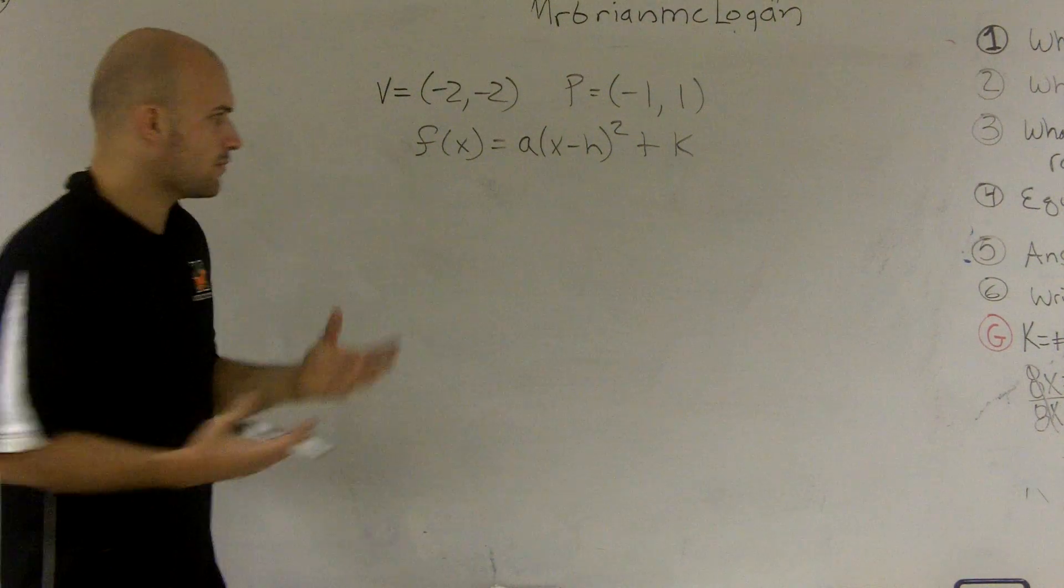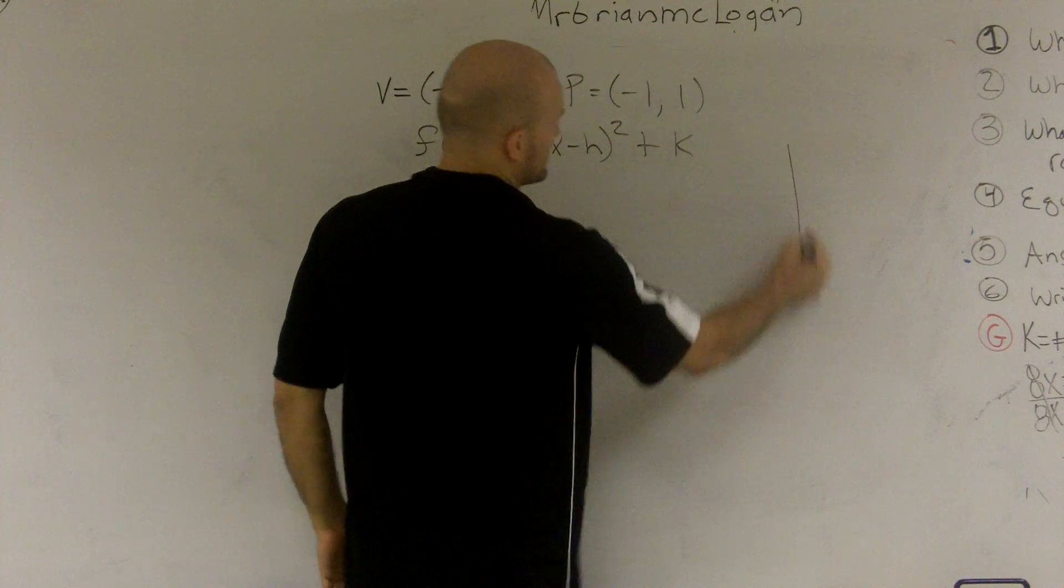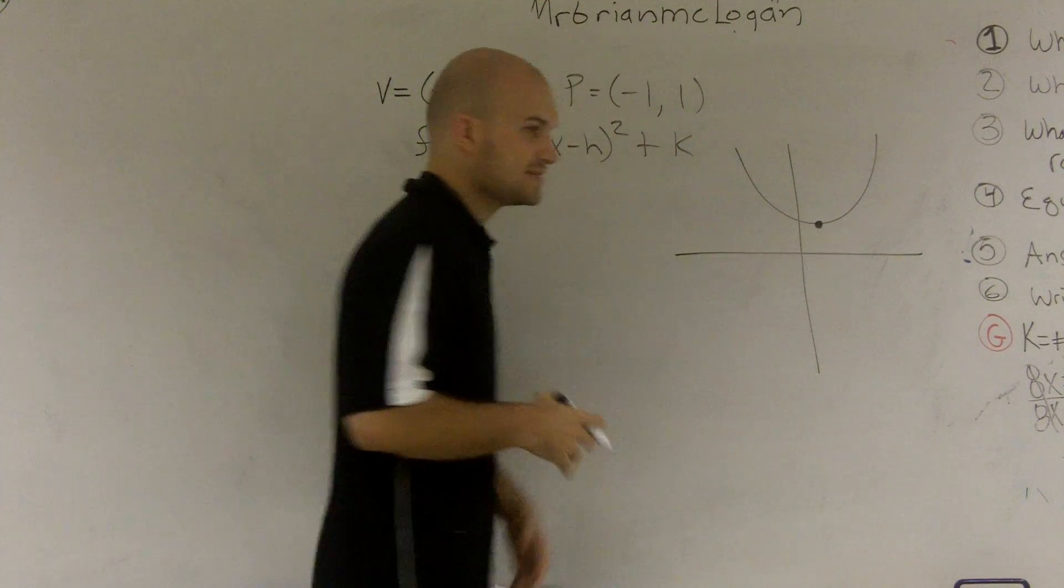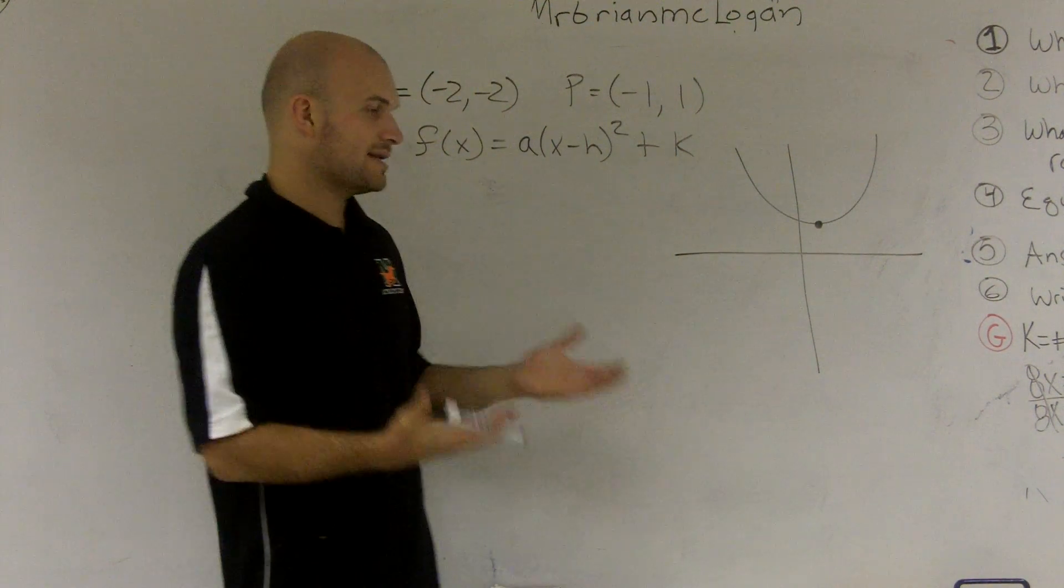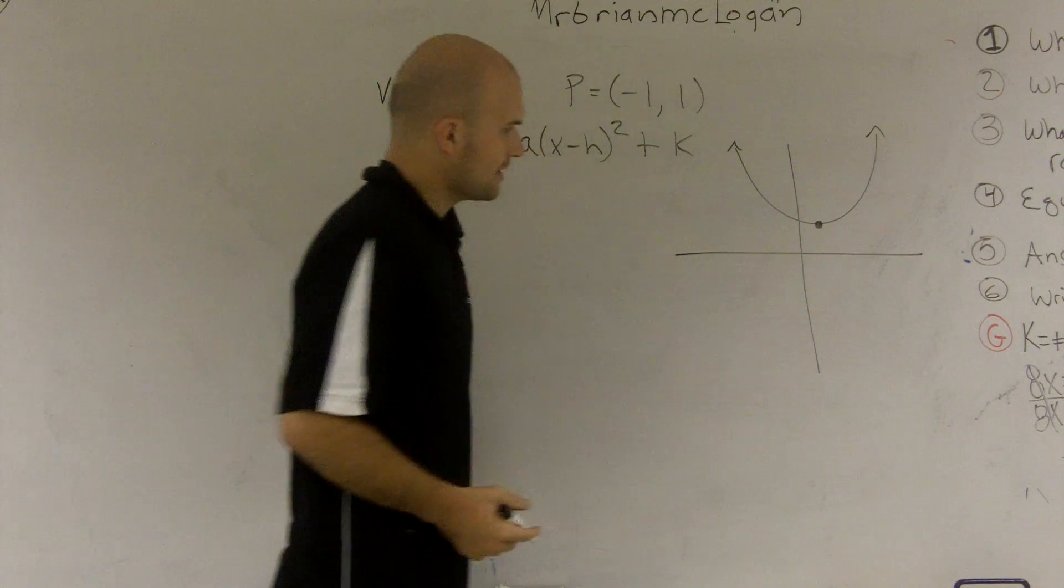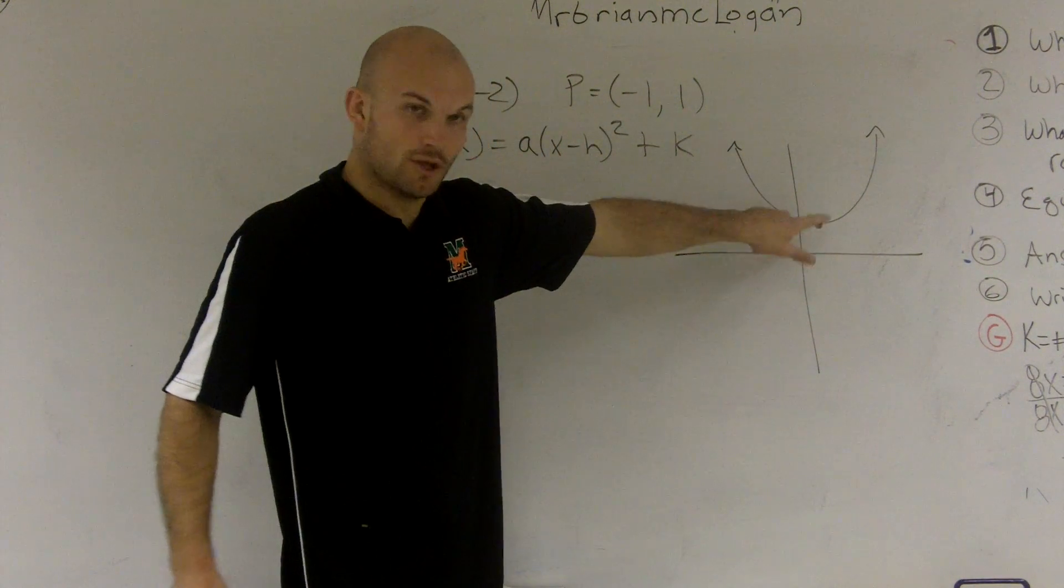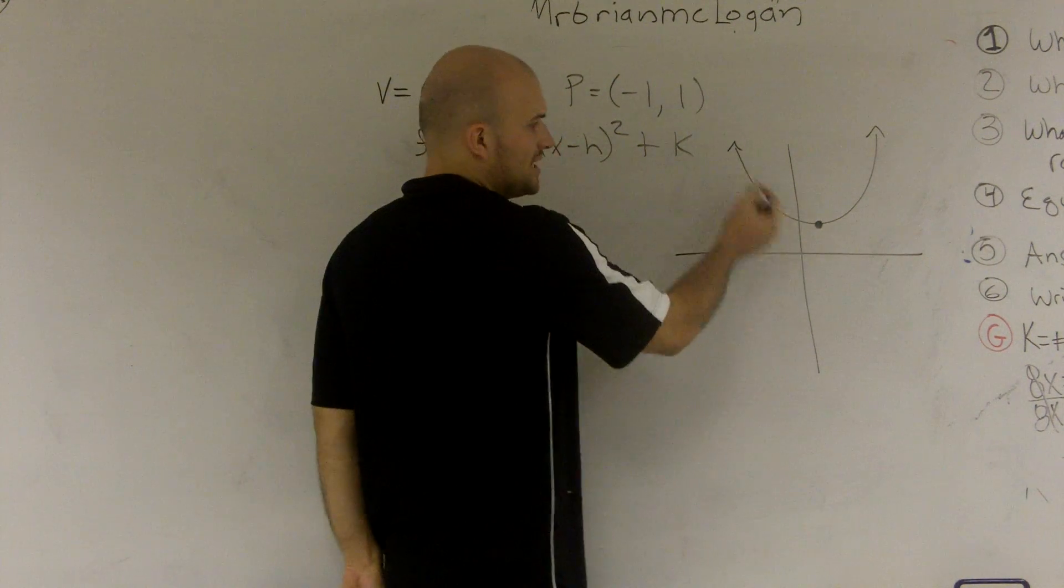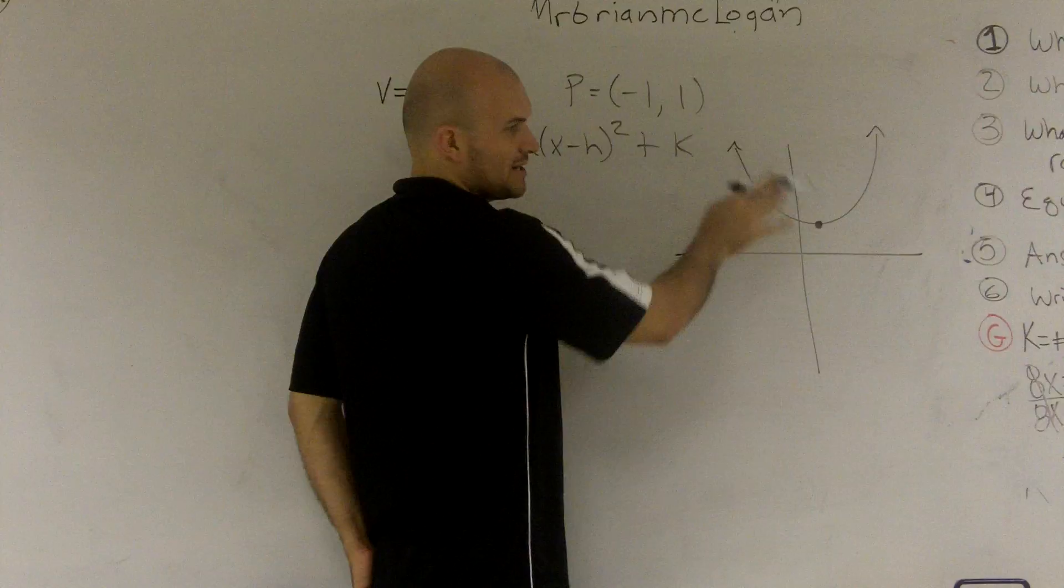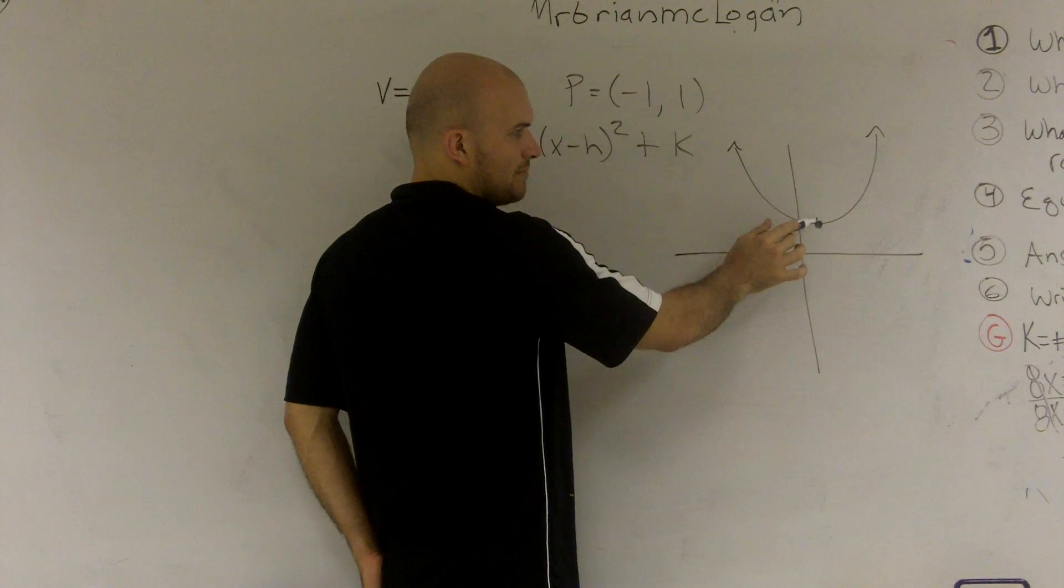So a couple things you need to remember. What is even the vertex and what is even a point? Well, let's say I was just going to graph a regular parabola. The vertex, remember, is either your minimum or your maximum, depending on what kind of parabola you have. And for this equation, my vertex is my lowest point. It's the minimum value or output value of your function, or the maximum. Here, it's going to be my minimum value of my parabola.